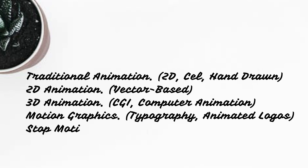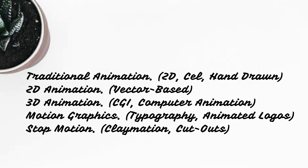Next, what are the types of animation? There are 5 types: Traditional animation — 2D, cell, hand drawn. 2D animation — vector based. 3D animation — CGI, computer animation. Motion graphics — typography, animated logos. Stop motion — claymation, cutouts.